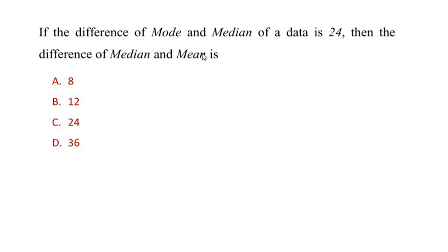So let us first change these wordings into a form of equation. So mode minus median is equal to 24, and we need to find out what is the difference of median and mean.